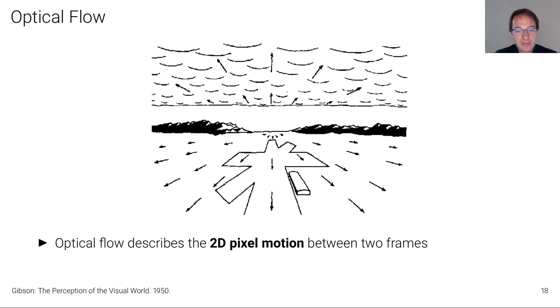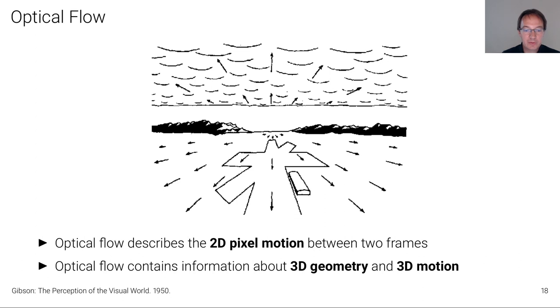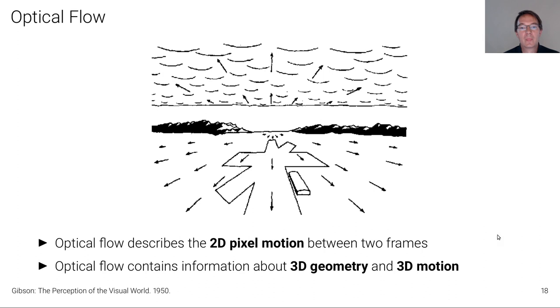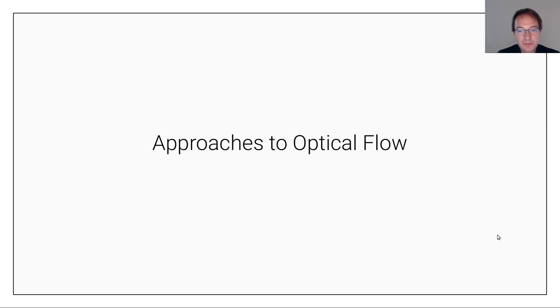Optical flow describes the 2D pixel motion between two frames, as illustrated in a famous example from Gibson. It contains information about both the 3D geometry of the scene and 3D motion. Here's an example from the KITTI dataset where optical flow fields are color-coded: color indicates the direction of optical flow and saturation indicates its magnitude. Objects easily stand out in these optical flow fields. There are multiple approaches to optical flow, and I'd like to briefly review the three dominant lines because this is important for the analysis I'll show later.